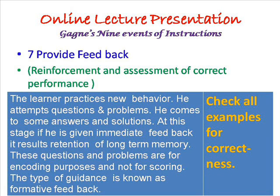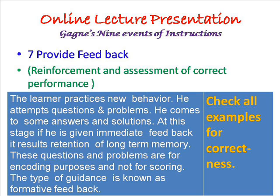This repetition increases the chances of retention in long-term memory. Seventh, provide feedback — that is reinforcement and assessment of correct performance. The learner practices new behavior, attempts many questions and problems, and comes to some answers or solutions. At this stage, if he is given immediate feedback, it results in retention in long-term memory. These questions or problems are for encoding purposes and not for scoring. The type of guidance given at this stage is known as formative feedback.